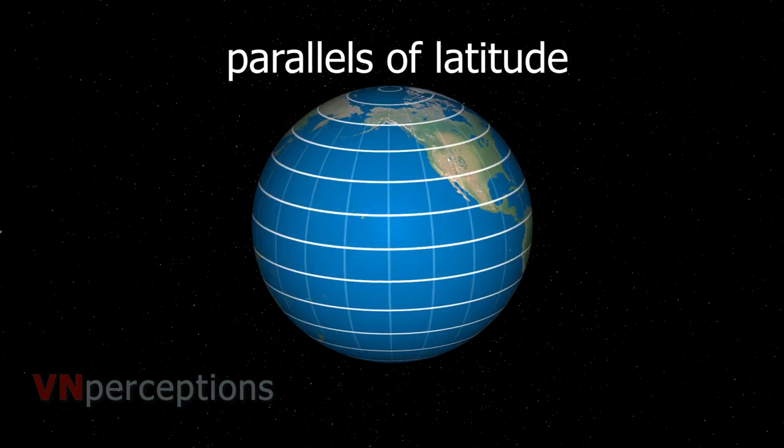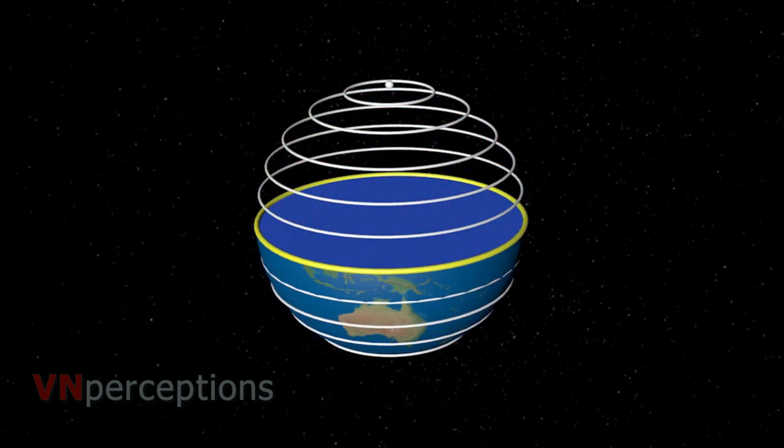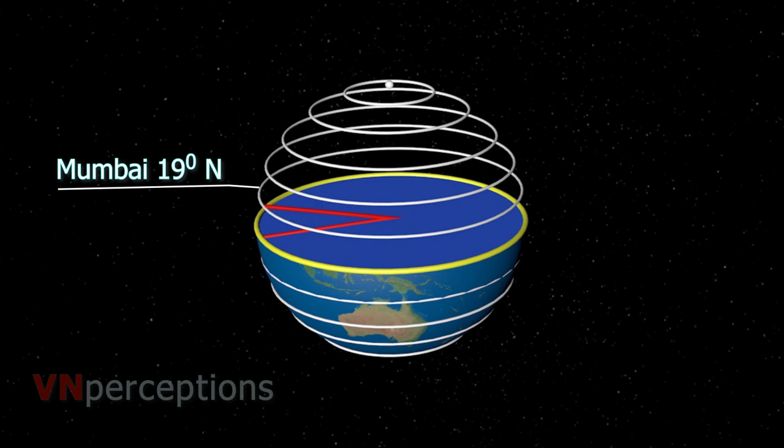What are latitudes? Latitude is an angular distance of a place north or south of the equator. Supposing I say Mumbai is 19 degrees north, this means Mumbai is 19 degrees north of the equator.